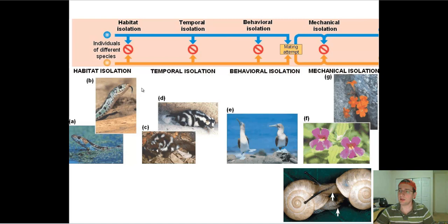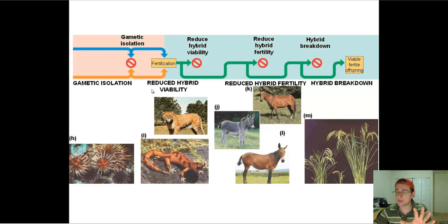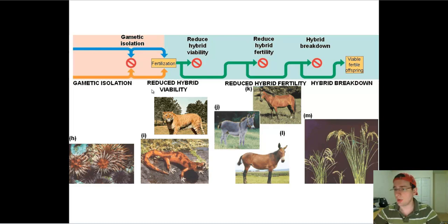To review: because species sometimes live in different places, do things at different times, have different behaviors, different structures, and different gametes and genetics, this will prevent them from mating with each other — and if mating, from successfully forming a zygote that leads to a new life form. This is what we call pre-mating isolation, and it has everything to do with the inability of members of two different populations to actually successfully form an offspring. In the next video, we'll talk about post-gametic isolation.